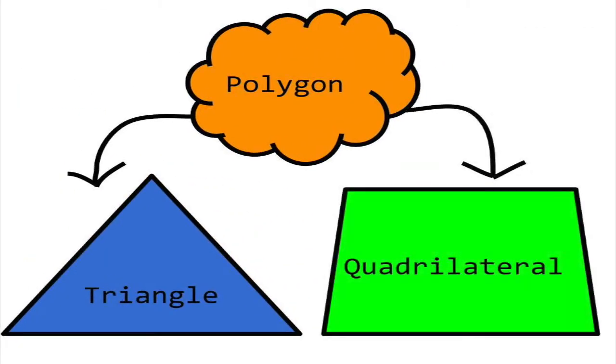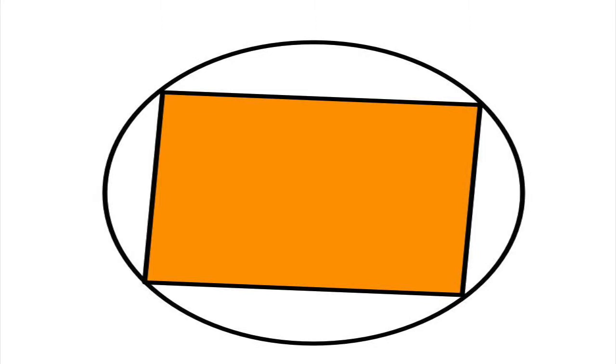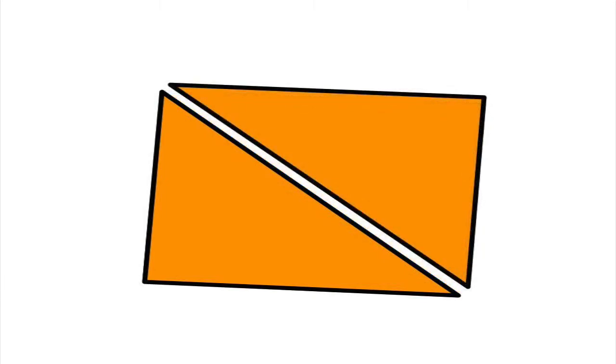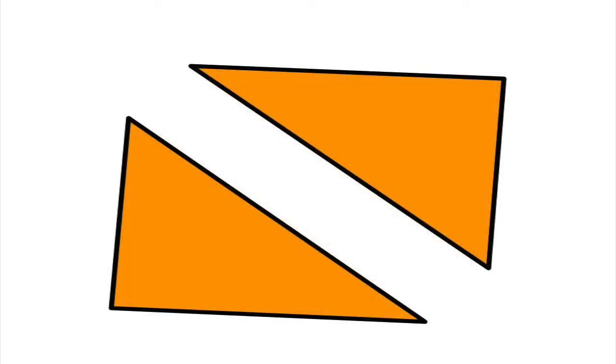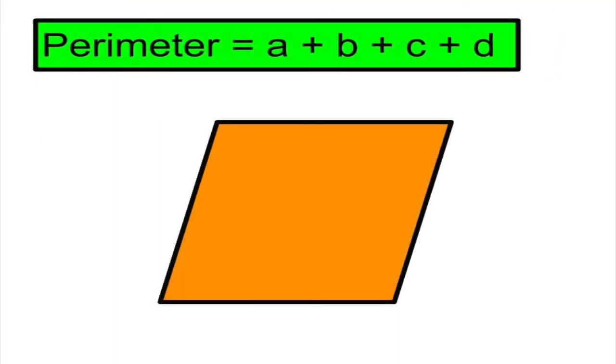For any cyclic quadrilateral, a quadrilateral that can be inscribed in a circle, we can compute the area by dividing the quadrilateral into two triangles, and then using Heron's formula to compute the area of each triangle. Finally, we add the areas of each triangle to get the total area of the quadrilateral. To get the perimeter, we simply add up the side lengths as we do in triangle.